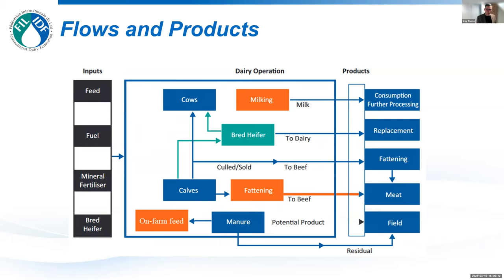The orange boxes represent activities which might be separable. For example, in a large operation if we had knowledge of the electricity used in the milking parlor or the refrigerant requirements used just in the milking parlor, those emissions can be separated and set aside. We do not have to allocate in this case because we know precisely that all of the refrigerants used at the milking parlor should be assigned to the milk product and not to the meat.